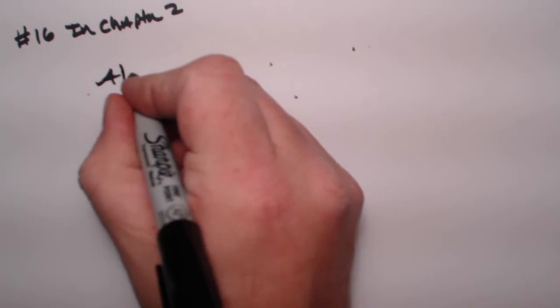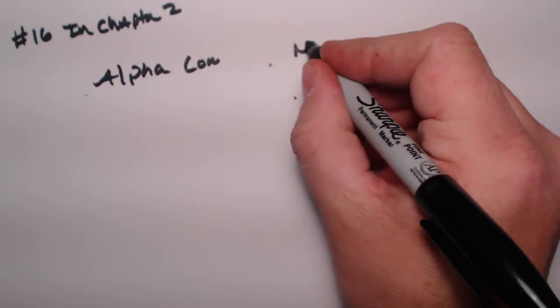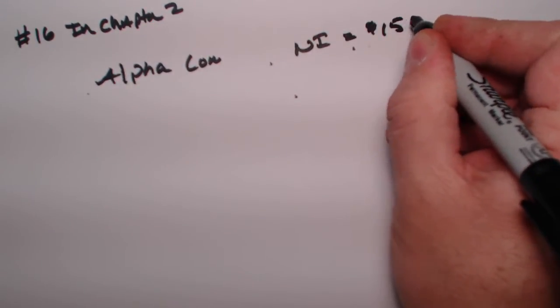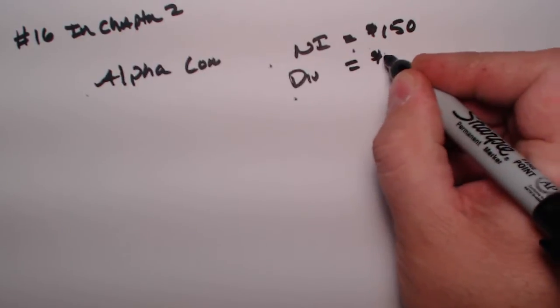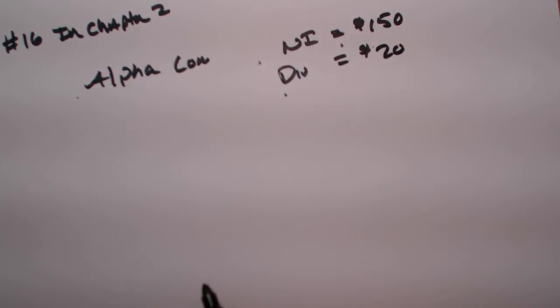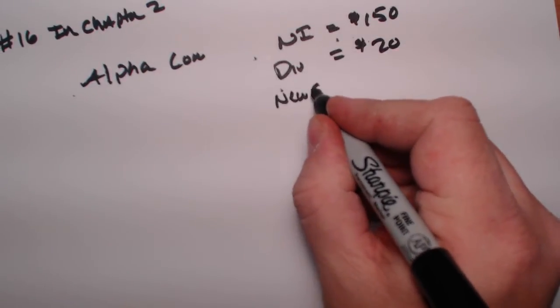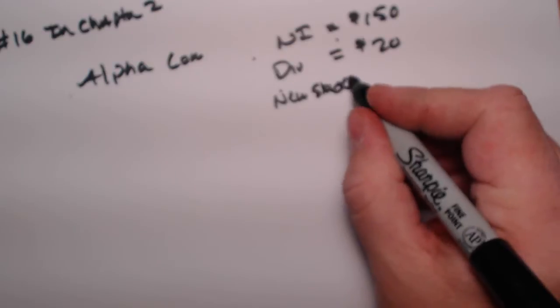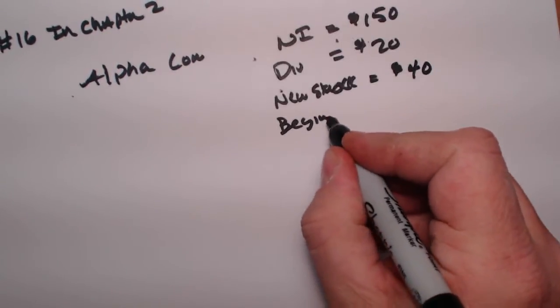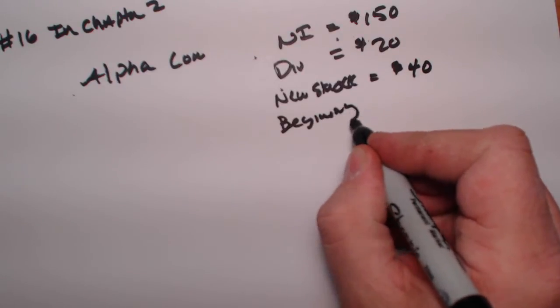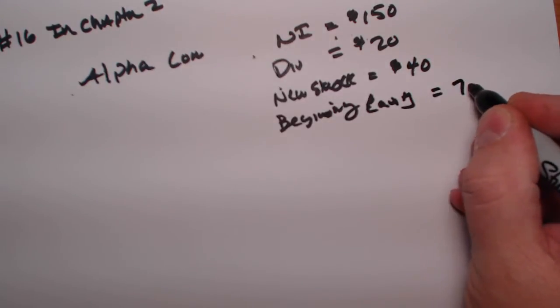The company is called Alpha. They had a net income of $150, dividends of $20 that they paid, sold new stock for $40, and the beginning equity of the year was $700.